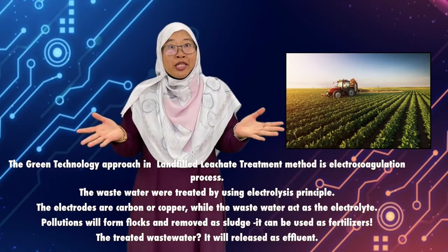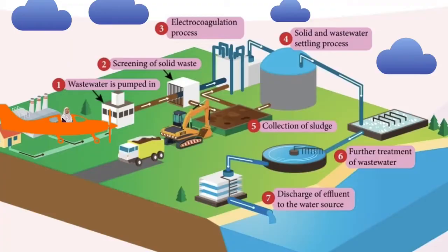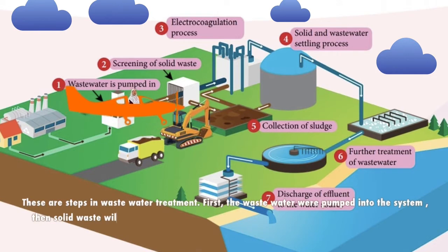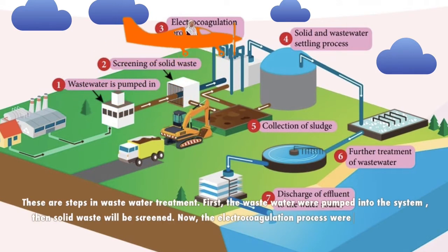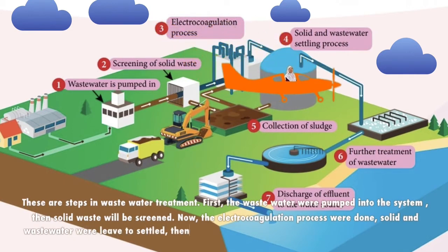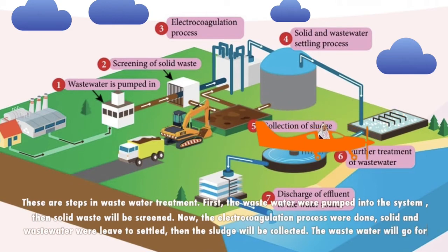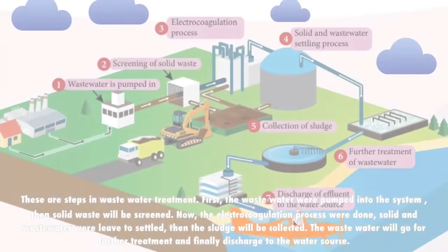The treated wastewater will be released as effluents. These are the steps in wastewater treatment: first, the wastewater is pumped into the system; then solid waste is screened; next, the electrocoagulation process is carried out; solids and wastewater are left to settle; then the sludge is collected; the wastewater goes for further treatment; and finally, it is discharged to the water source.